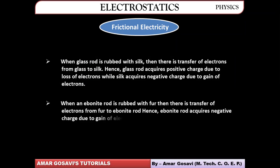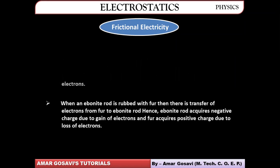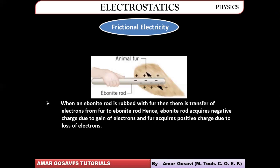Similarly, when an ebonite rod is rubbed with fur, there is a transfer of electrons from fur to the ebonite rod — it happens in the opposite direction. Wherever electrons go, they give negative charge. So the ebonite rod acquires negative charge and correspondingly the fur acquires positive charge.